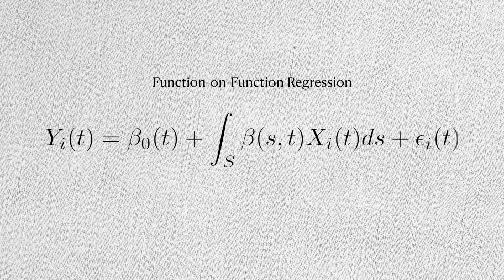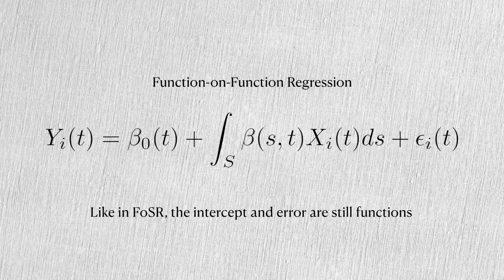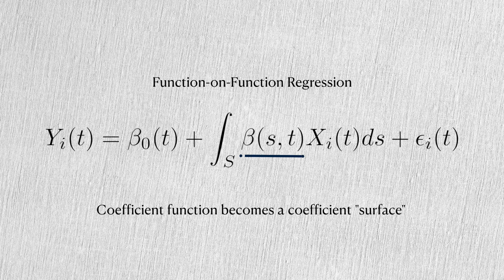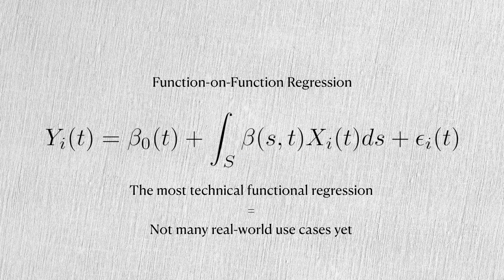Finally, we get to function-on-function regression. Like with function-on-scalar regression, both the intercept and error are functions. The coefficient function is now a kind of coefficient surface. I tried to find an actual use case published in the literature, but I could only find case studies in statistical journals.